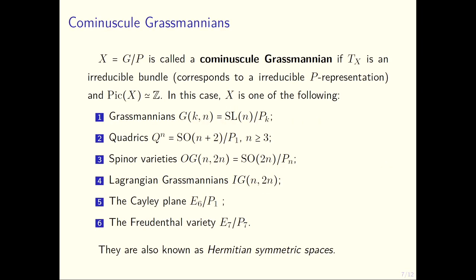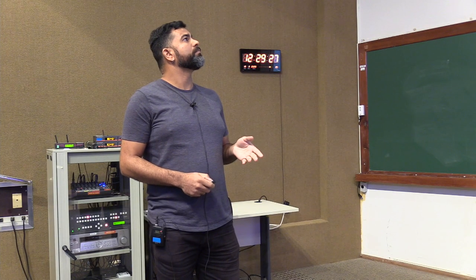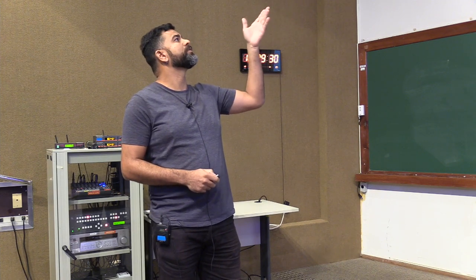We fell into this class of homogeneous varieties called cominuscule varieties. The point here is that by definition these are the varieties where the tangent bundle is an irreducible bundle. On a homogeneous space you have several vector bundles, the ones that are invariant by the action of G.